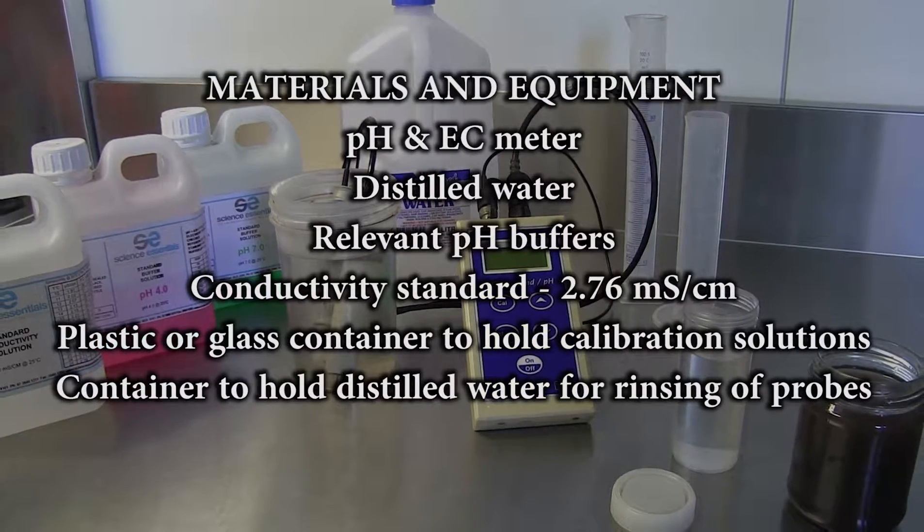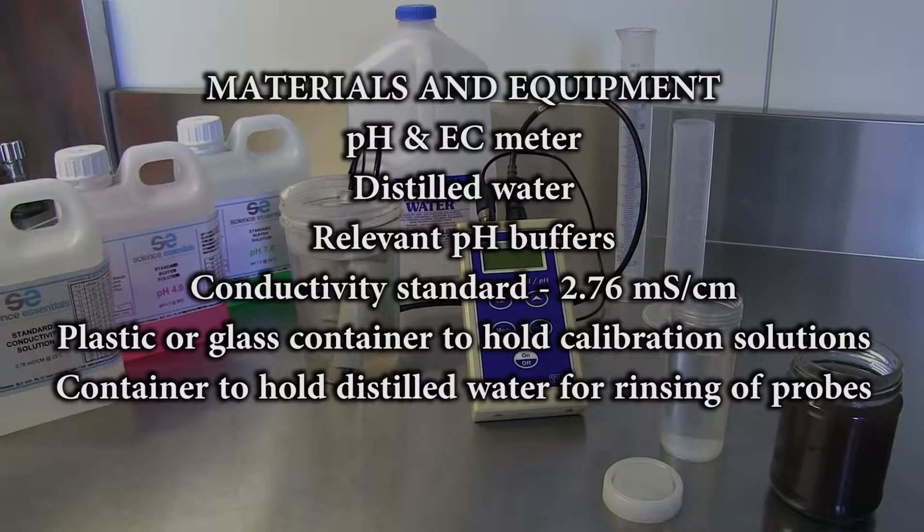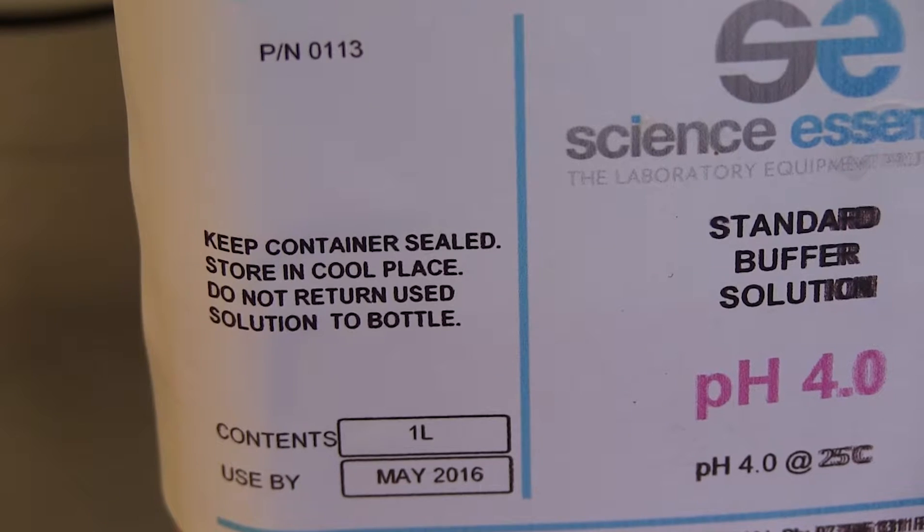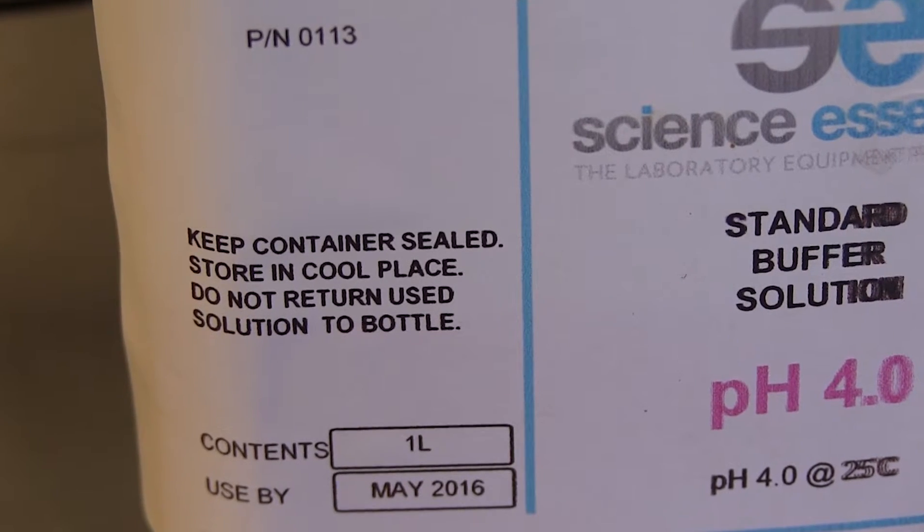The following is a list of basic materials and equipment required to successfully calibrate a pH and conductivity meter. If buffers require preparation before use, prepare the buffer according to the manufacturer's directions.